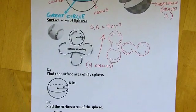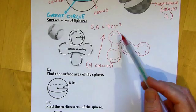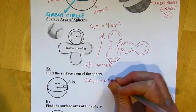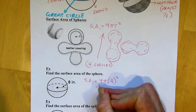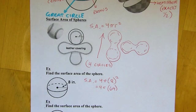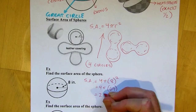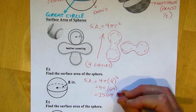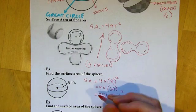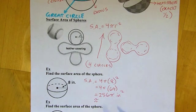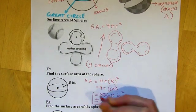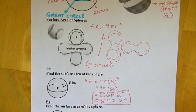All right. So let's try out some examples. Find the surface area of the sphere. So all I really need is the radius. And I do have that here. So my surface area is going to be 4π(8)². So I'm going to square the eight first. And then four times 64 is 256. So this would be 256π square inches since it is area. Or you can make a decimal approximation by taking 256 times π. And that would be about 804.2 square inches. So either one of those work.